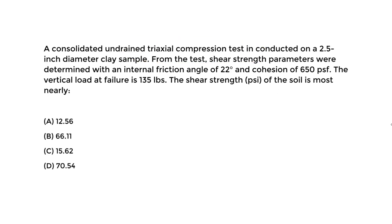Let's draw a quick picture. We take a cylindrical specimen with a certain diameter D, and we apply a stress on top — I'll call it delta sigma. This is the applied vertical stress, essentially just the pressure over the area. In the horizontal direction, we also have the confining stress acting in both directions. This is the horizontal stress and we call it sigma 3.